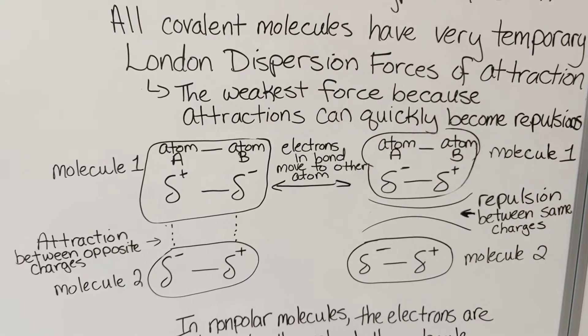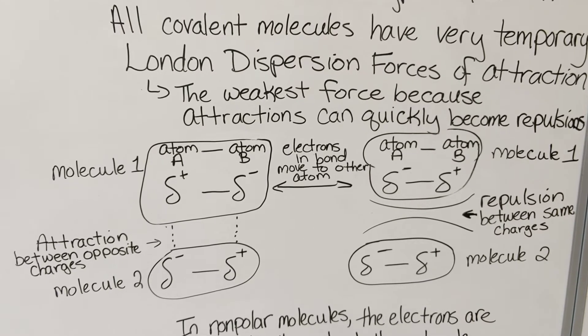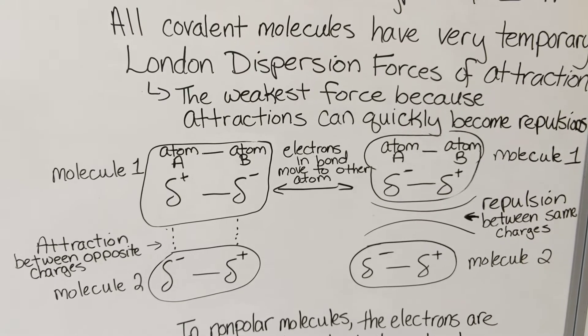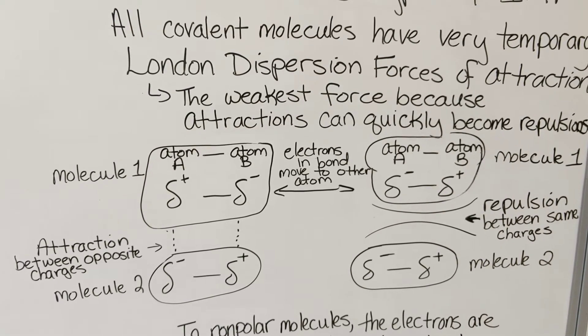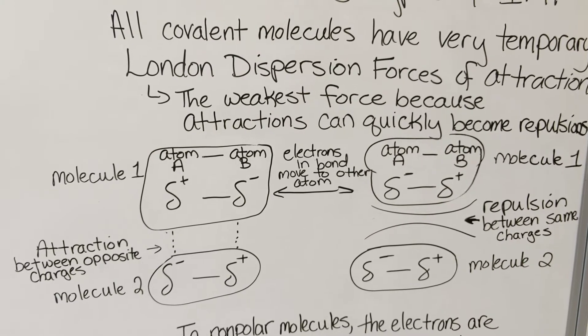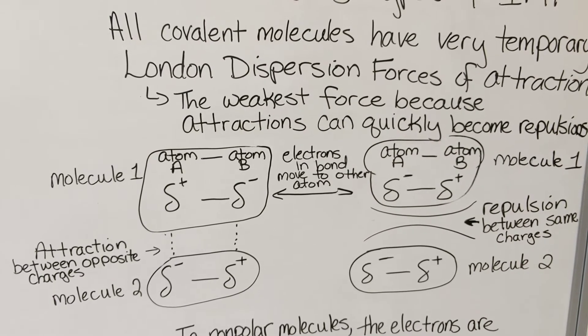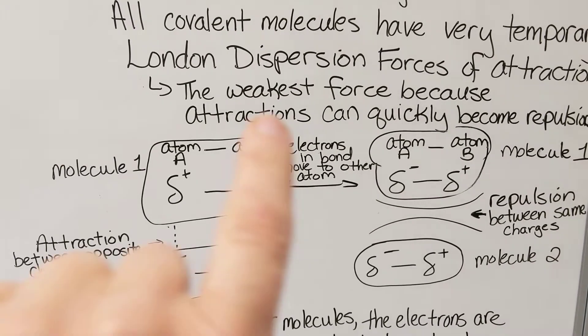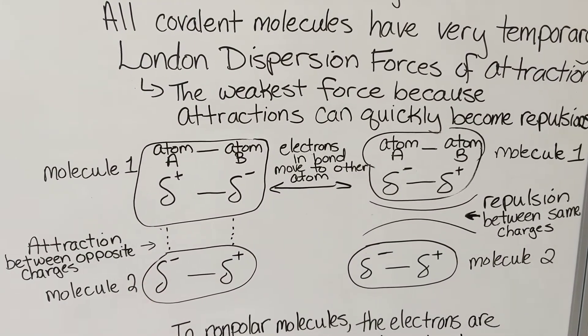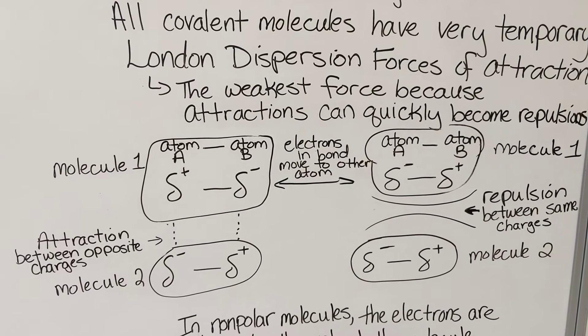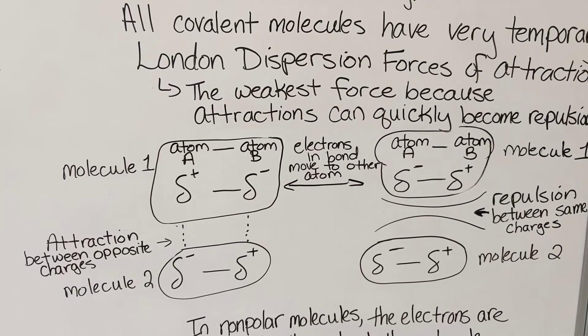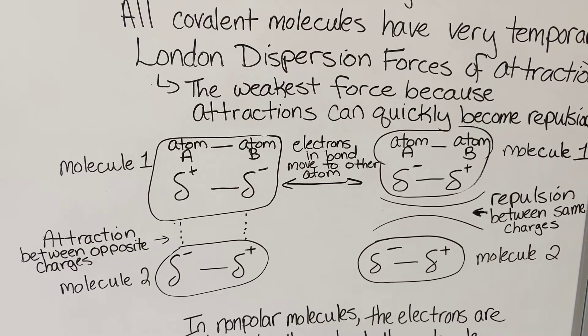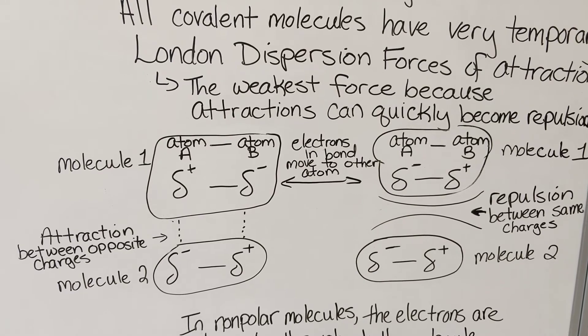Molecule 1 has a more partially positive side on the left of the bond or molecule. On the right side, there's a more partially negative atom or side to the molecule. Currently, on the left side here, we have an attraction between another molecule of the same compound. That's happening because we have the partially positive side on one molecule being attracted to the partially negative side on the other molecule.